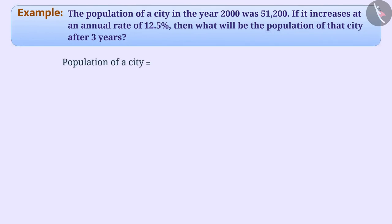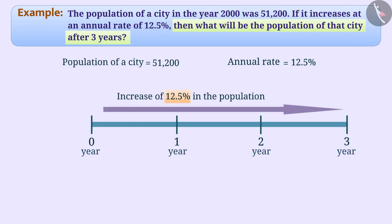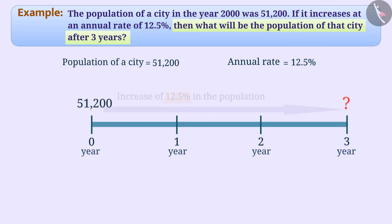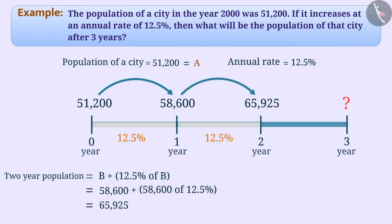Next example: the population of a city in the year 2000 was 51,200. If it increases at an annual rate of 12.5%, then what will be the population of that city after three years? Every year there is an increase of 12.5% in the population. If we consider the population of 2000 as A, then after one year it will be A plus 12.5% of A. This new population will again increase by 12.5%. In this way, the population is compoundly increasing.